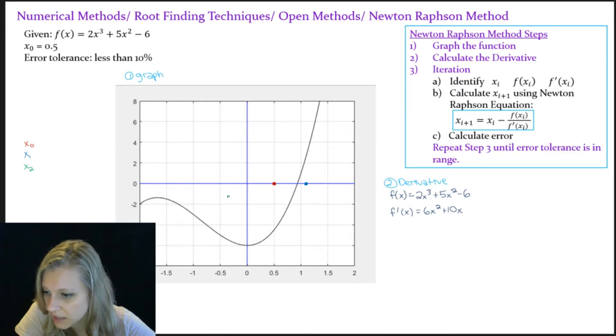And then we determine the x2 was 0.97, so it's about right there. So we're definitely a lot closer.